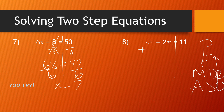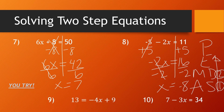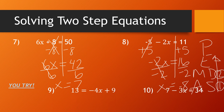Moving on to number eight — draw my line. I see a negative 5 to get rid of, so I'm going to add 5 to both sides. That cancels here. When I add I get negative 2x equals 16. That's multiplying, so now I divide by negative 2 and I get x equals negative 8. Go ahead and try these two on your own — pause the video and show your work in your notes. You should get x equals negative 1 on number nine and x equals negative 9 on number ten.